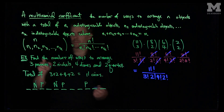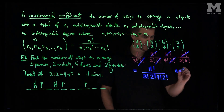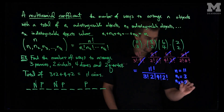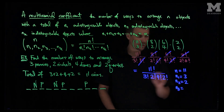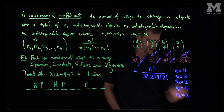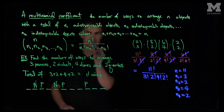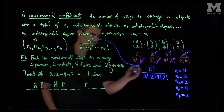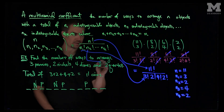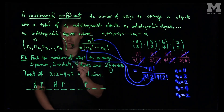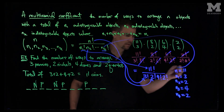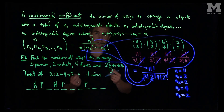In this formula, n equals 11, n1 (the number of pennies) equals 3, n2 (the number of nickels) equals 2, n3 (the number of dimes) equals 4, and n4 (the number of quarters) equals 2. Plugging into the formula gives 11 factorial on top, with 3 factorial, 2 factorial, 4 factorial, and 2 factorial on the bottom — matching perfectly.